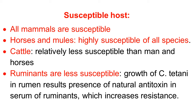Which hosts are susceptible to tetanus? All mammals are susceptible. Among these, horses and mules are the most highly susceptible of all species, so tetanus is especially a disease of horses and mules. Cattle are relatively less susceptible than humans and horses. Ruminants are comparatively less susceptible because Clostridium tetani grows in the rumen, which causes the production of natural anti-toxin in the serum of ruminants, giving them resistance. So cattle are relatively less susceptible.